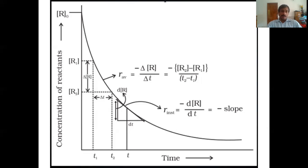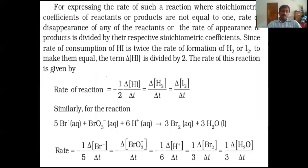What do you have to plot? Concentration against time — concentration of reactant or concentration of product against time. I think that is clear to you.